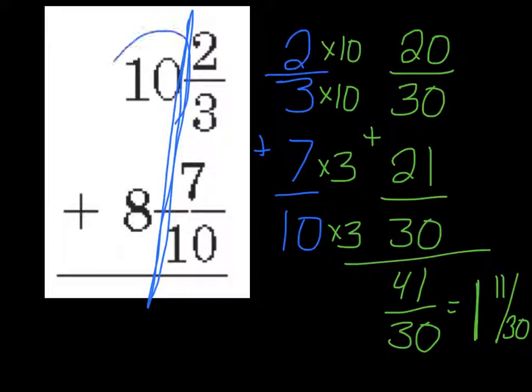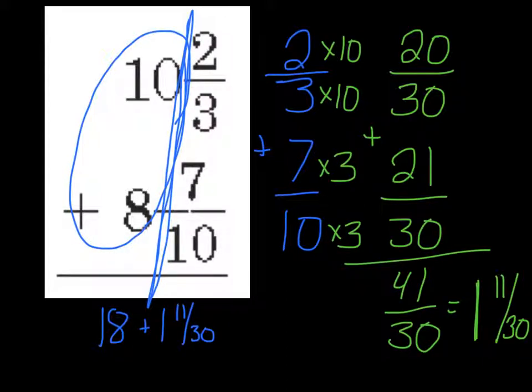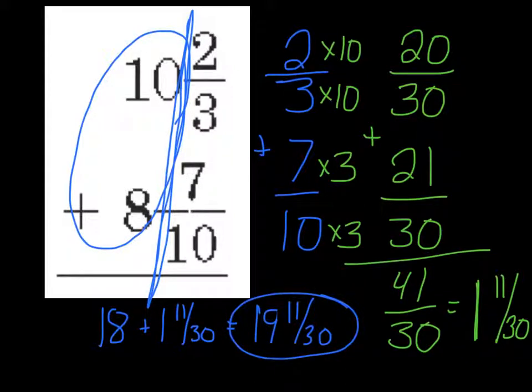Now I go back to the whole number part of my problem. 10 plus 8 is 18, plus the 1 and 11 thirtieths I got for my fraction portion. So this time I had to do a little bit of renaming with my fraction, which means I'm going to have to do a little bit of addition here when I combine my two pieces together. 18 plus 1 and 11 thirtieths is 19 and 11 thirtieths. And 11 thirtieths is my final answer. But again, the key is do the fraction part, do the whole number part. Sometimes there's a little bit of renaming involved and then combine those two pieces together.